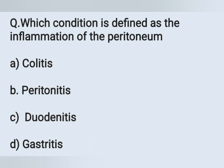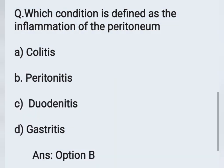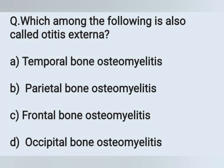The next question: Which condition is defined as inflammation of the peritoneum? Option A: colitis, Option B: peritonitis, Option C: duodenitis, Option D: gastritis. Inflammation of the peritoneum is peritonitis. Option B is the correct answer.